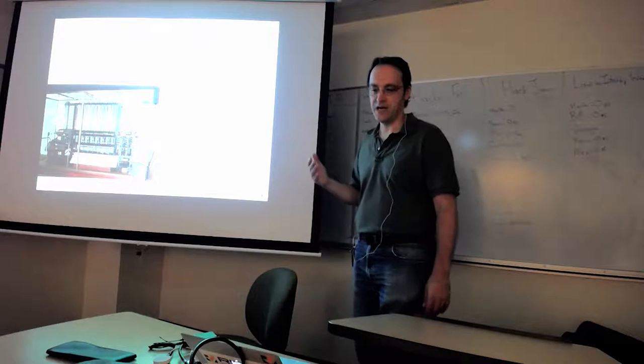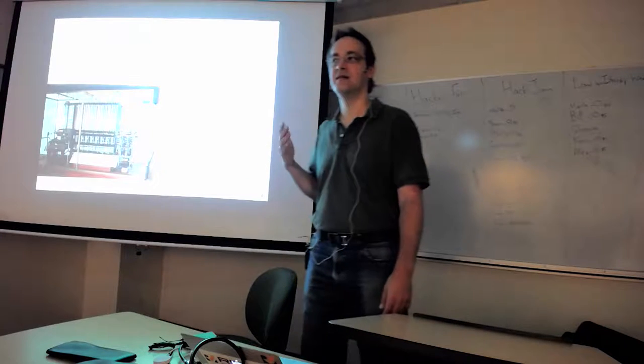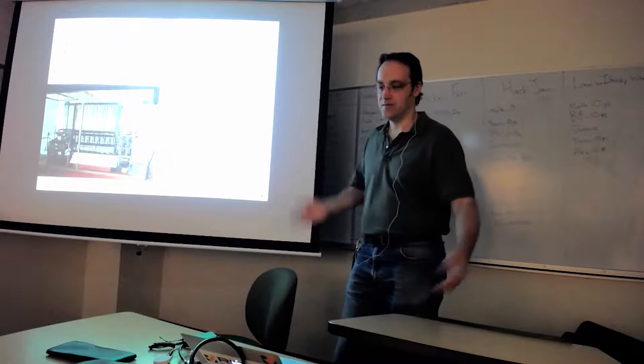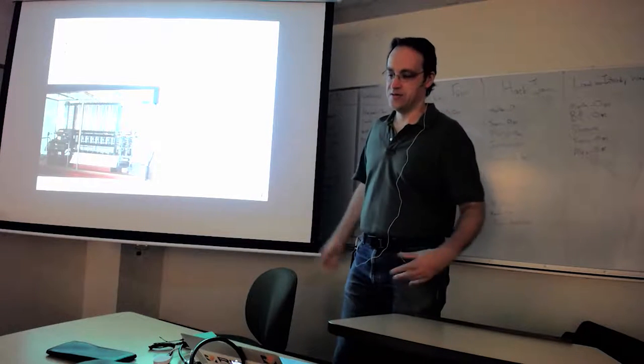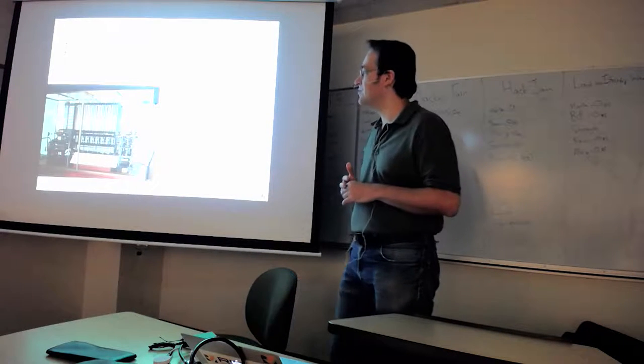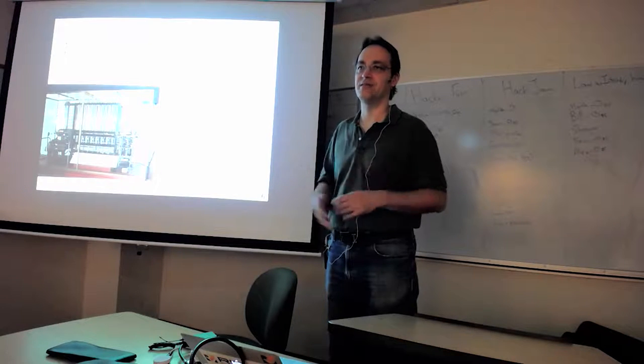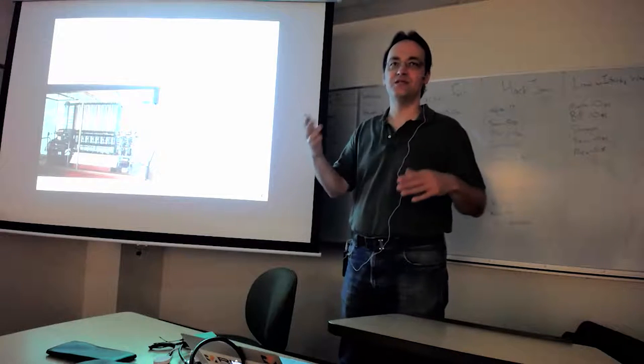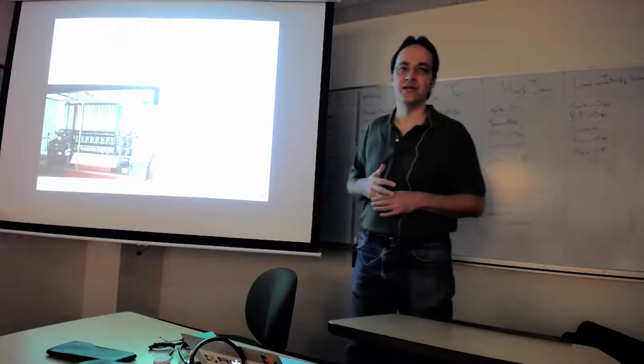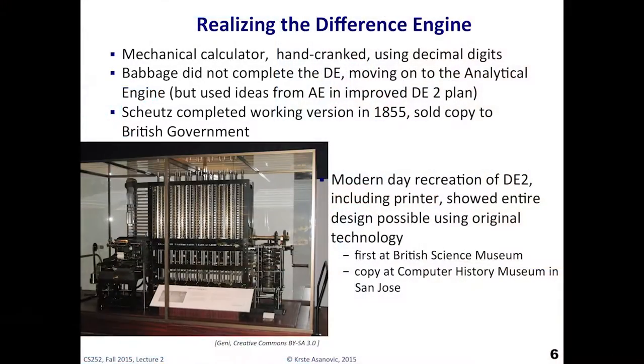So he had this idea, he wrote papers on it, but he didn't actually finish the design and implementation of this because he'd sort of moved on to bigger things, which was the analytical engine. But a bunch of years later, a fellow in, I think Sweden and his son, they actually took those ideas and actually built a working version. This was in 1855 and they actually sold a copy to the British government. And the application for this was really artillery tables. So when you are firing a gun, you need to know how much charge you put in and the given angle of the gun and given distance you're trying to shoot and the wind speed and all these things.